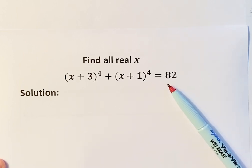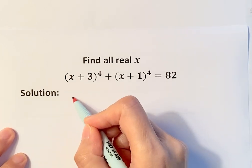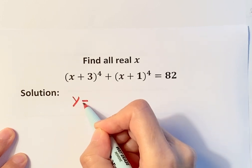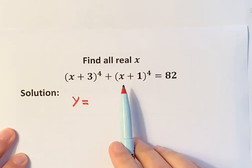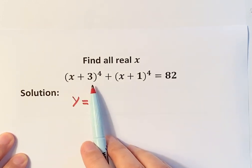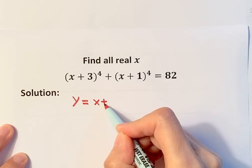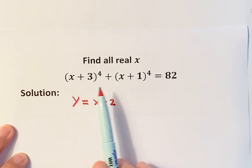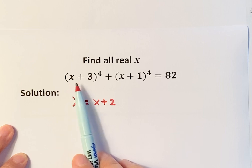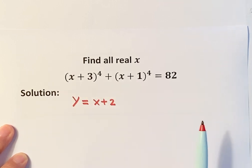How to solve this equation? I'm going to start off by defining a new variable y. We are going to let y equal the midpoint of x+1 and x+3, which is x+2. You just take the average of x+3 and x+1, and that's x+2.